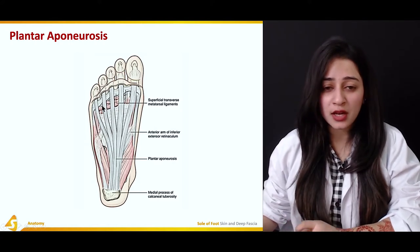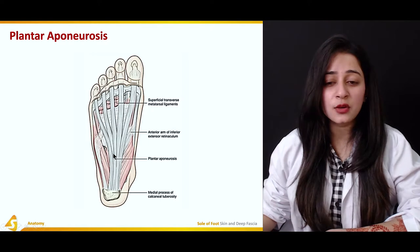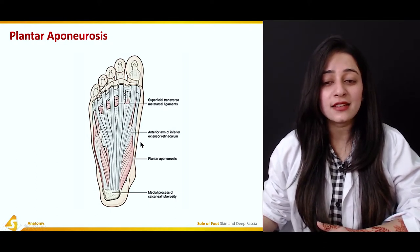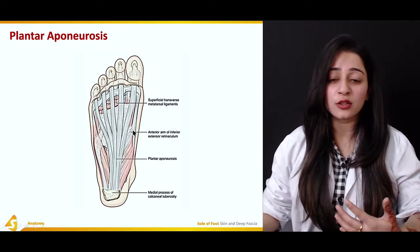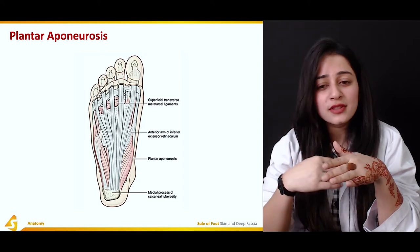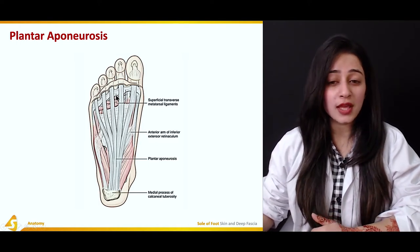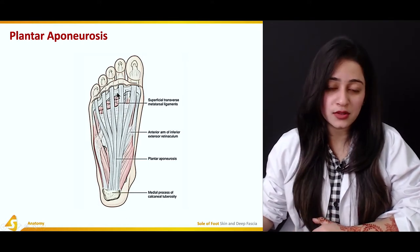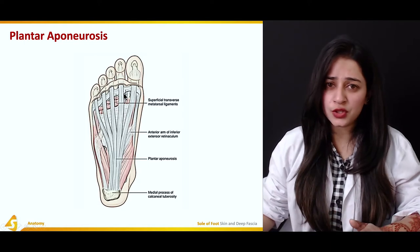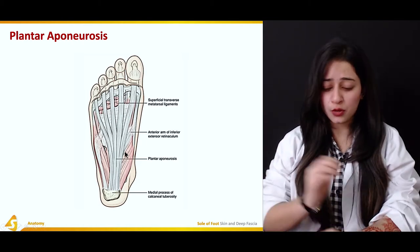Here is a very clear picture of the plantar aponeurosis — you can see it is white in color because it contains connective tissue. This is your plantar aponeurosis originating from the medial or lateral tubercles of the calcaneal bone. Also visible is the anterior arm of the inferior extensor retinaculum, which is present on the dorsal surface of the foot but extends a bit into the sole. We also have the superficial transverse metatarsal ligaments, which are superficial ligaments between the metatarsal bones, very near to the skin.